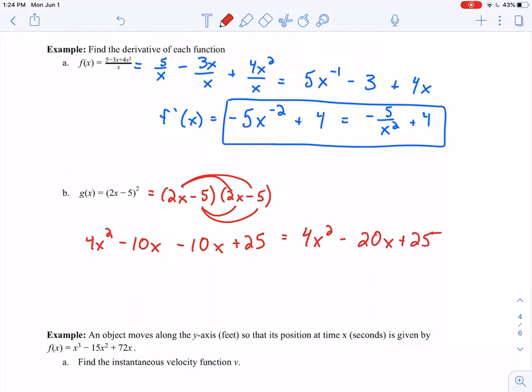And notice here at this point, I haven't actually taken the derivative. I've just got my function ready to take the derivative. So this is still g of x over here, which means I still need to apply my power rule, which when I take the derivative, I should have 8x minus 20. There we go. So that is my derivative.